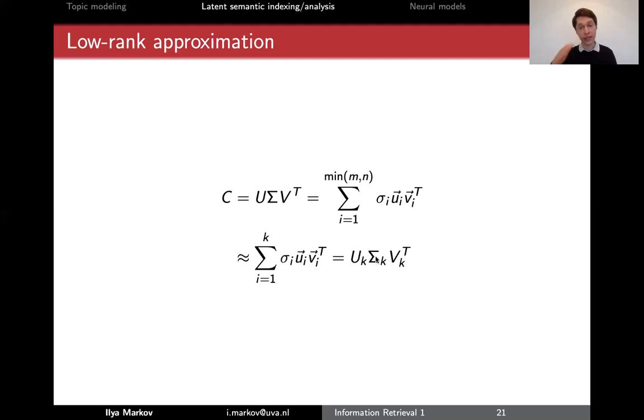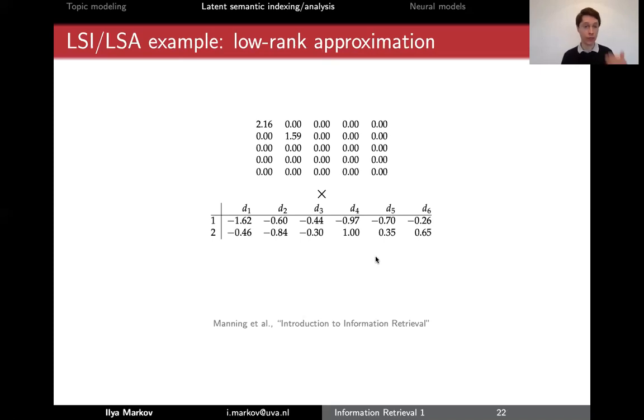So, for example, if we do the K equals two, then the documents are now represented with vectors of just the two components, where the second component, as I said, really distinguishes between the two sets of documents. And in terms of singular values, we only have the first two singular values.